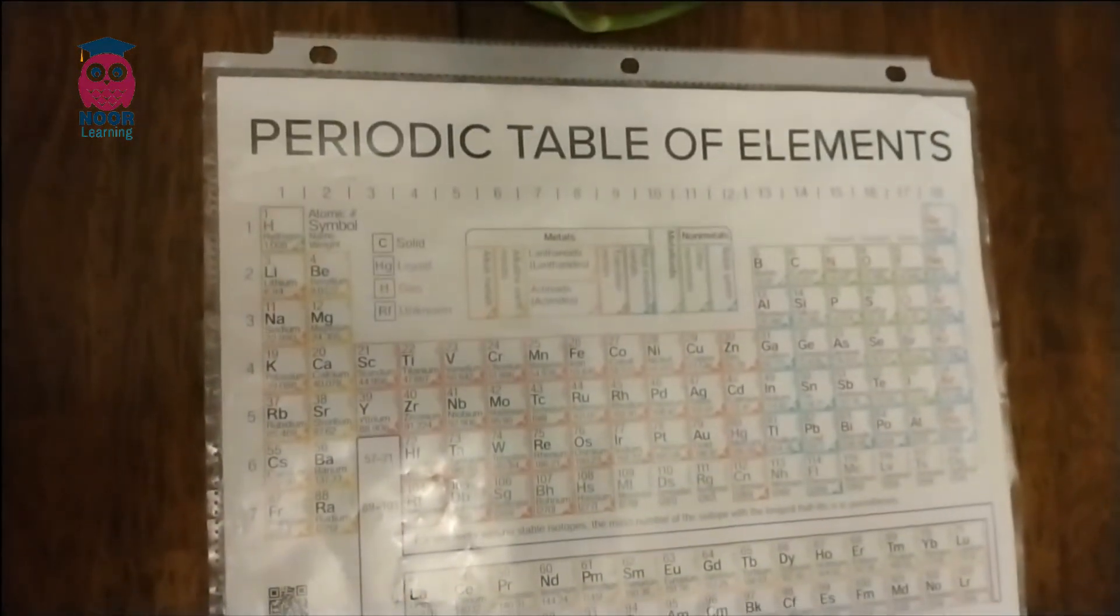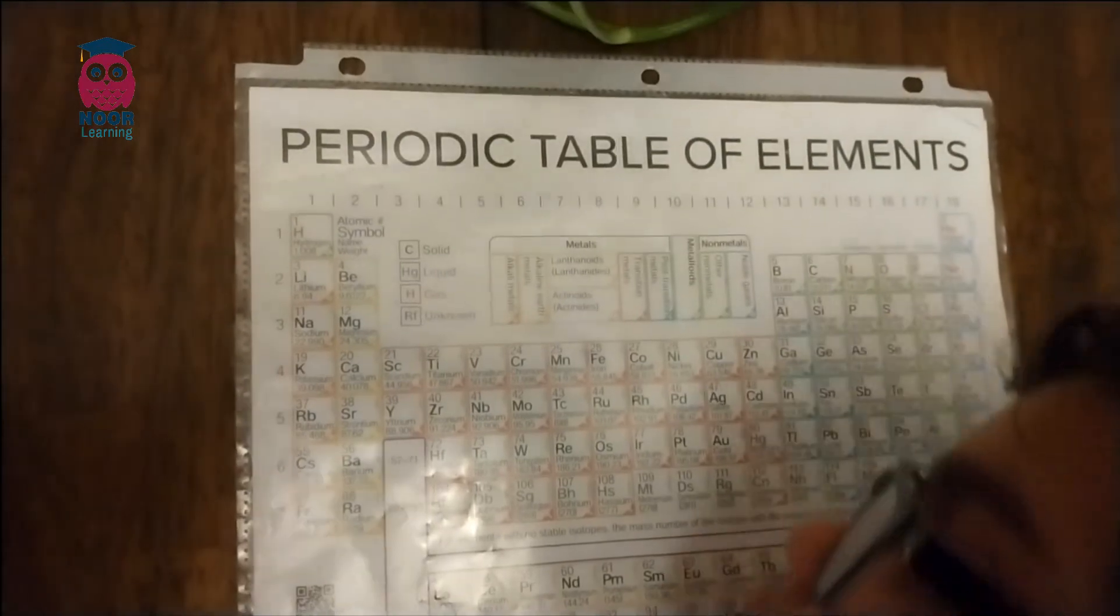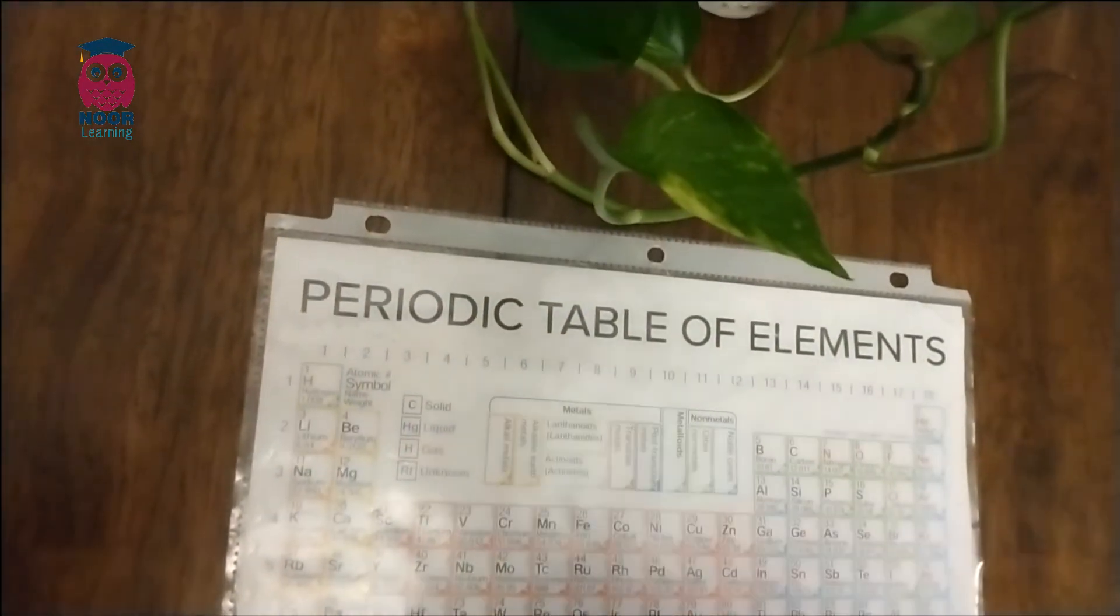This is the periodic table. Noble gas is stable. Halogens and alkali react aggressively. We'll see how they're used in real life, metals to the right.